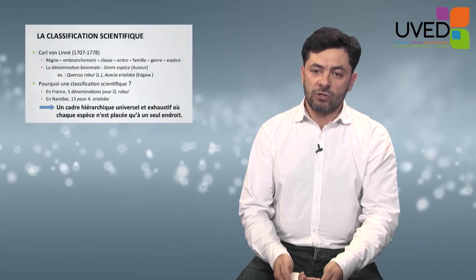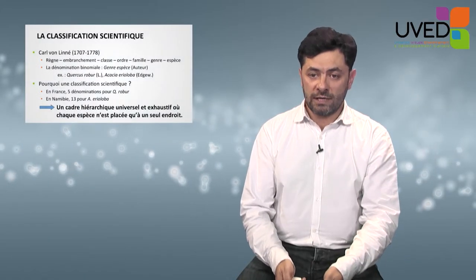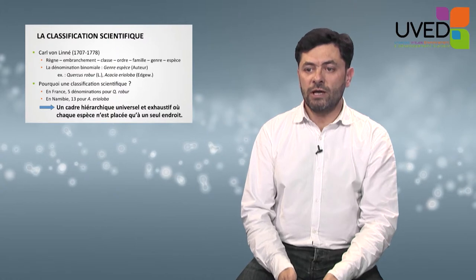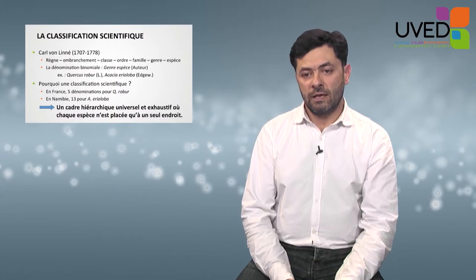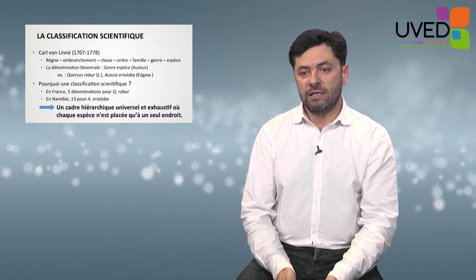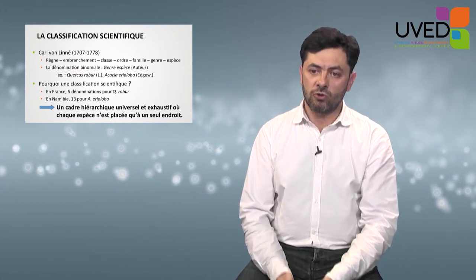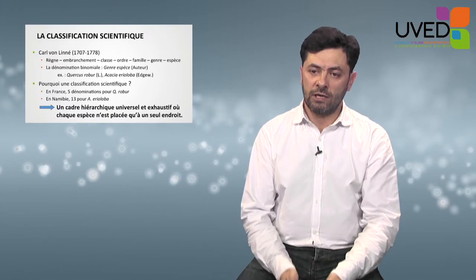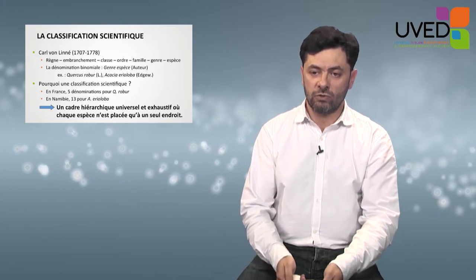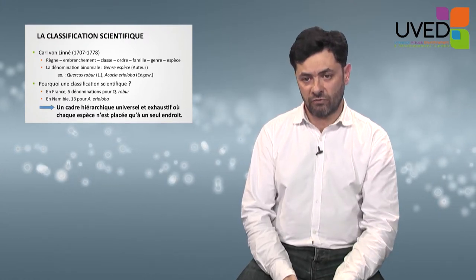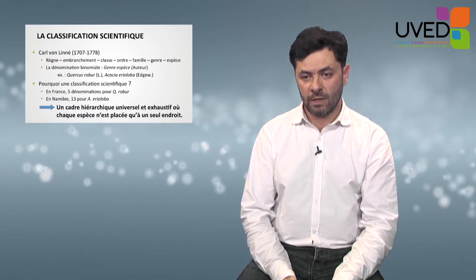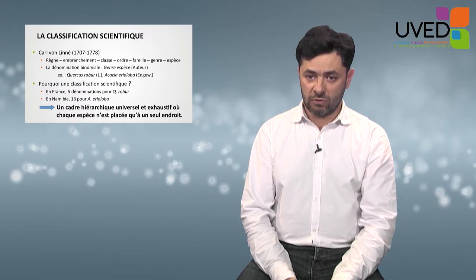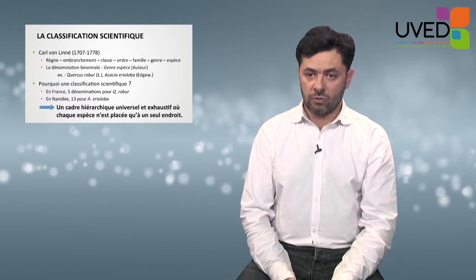The scientific classification was instituted by Carl von Linné, a naturalist. He divided nature into main categories from the kingdom to the species, and he set up the binomial denomination — genera, species — and he was the author who described them for the first time.